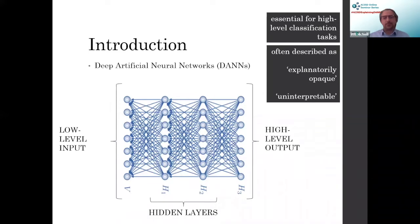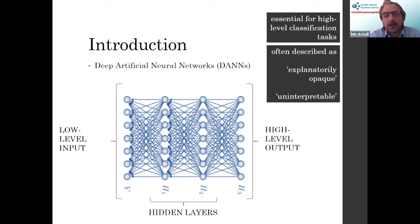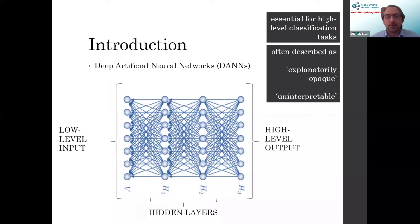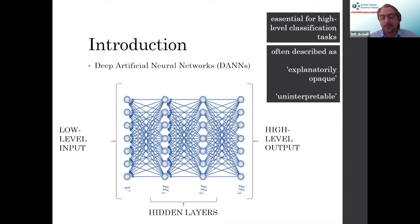Another relatively well-known thing about deep artificial neural networks is that they're often described as being explanatorily opaque, uninterpretable, or inexplicable. Those descriptions aren't just from laypeople like me — they can often be found in the mouths of people who themselves are designers, creators, and researchers of deep artificial neural networks. And that is what interests me: this explanatory opacity that seems to be commonly accepted as being manifest by these brilliant high-level classifier machines — machines that are a bit like us in how brilliant we are at classifying things.